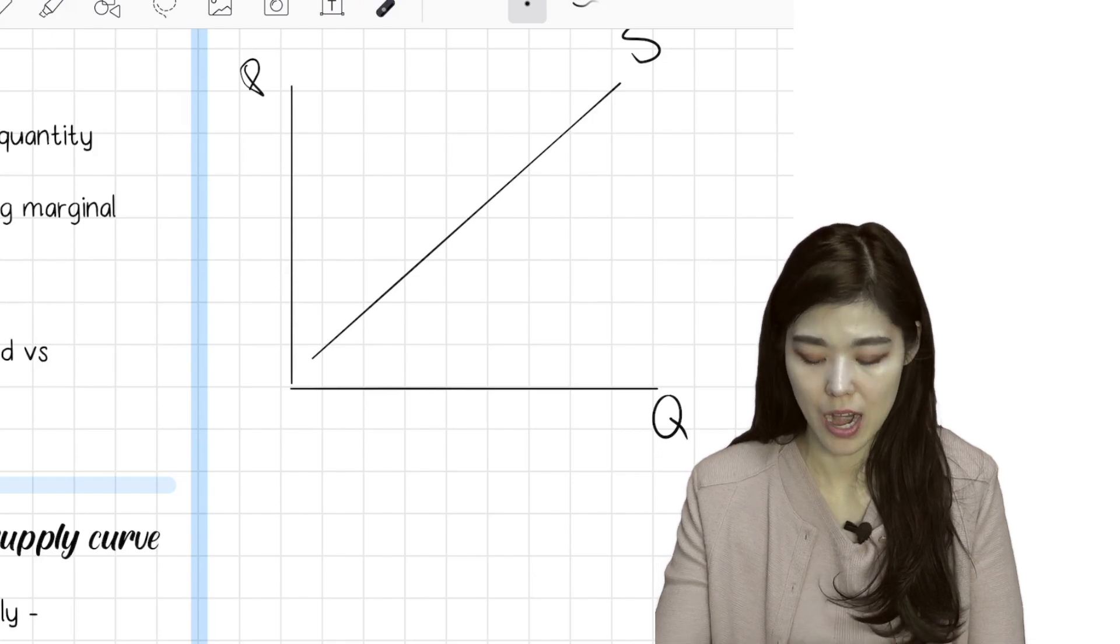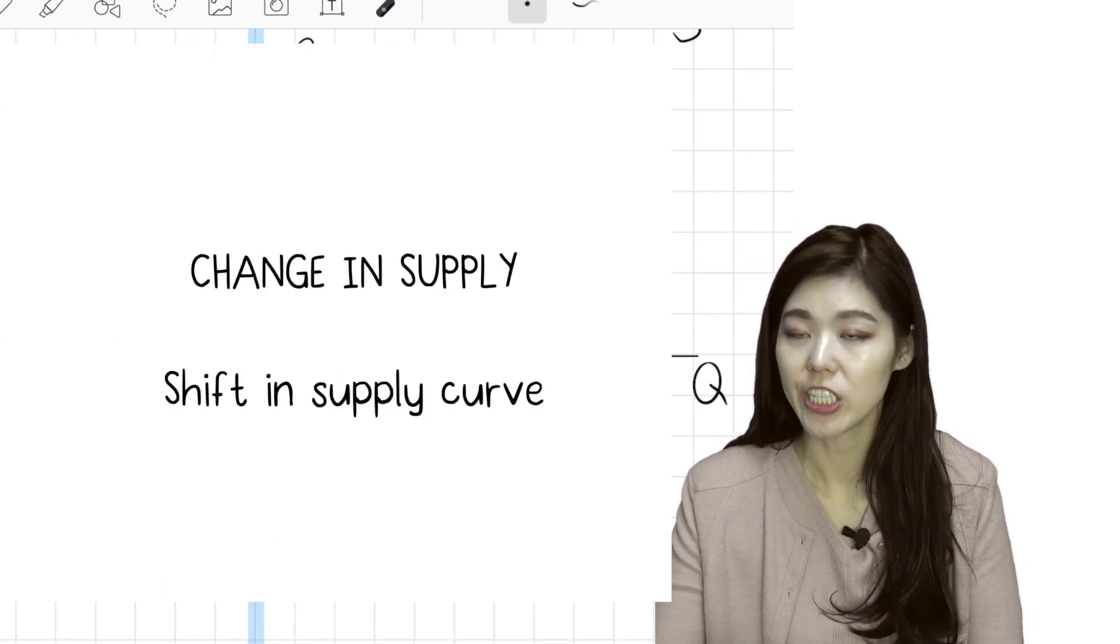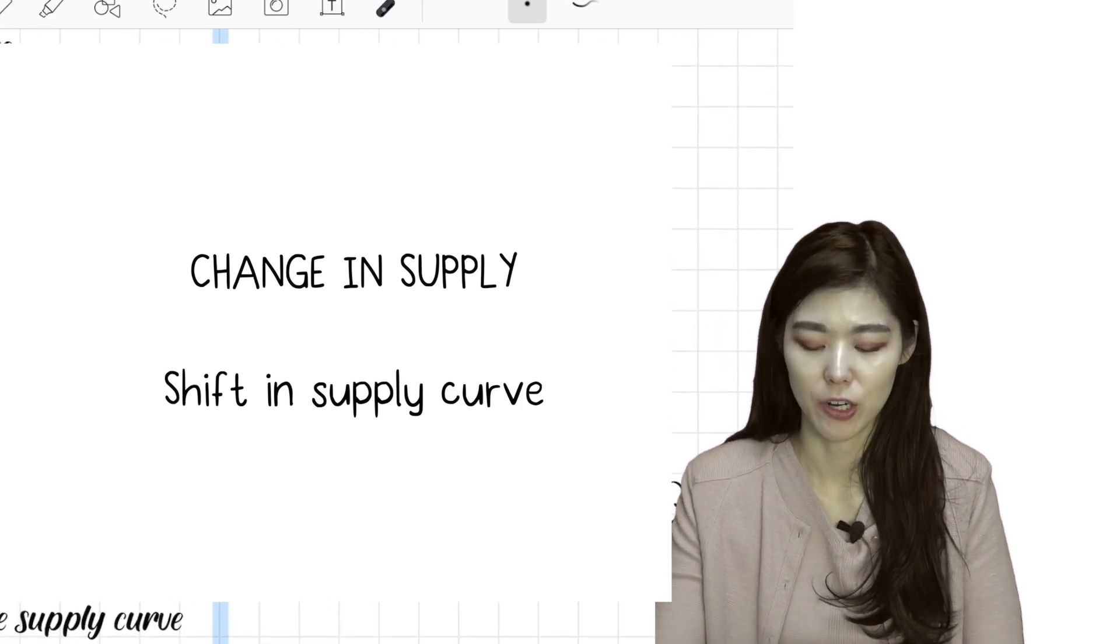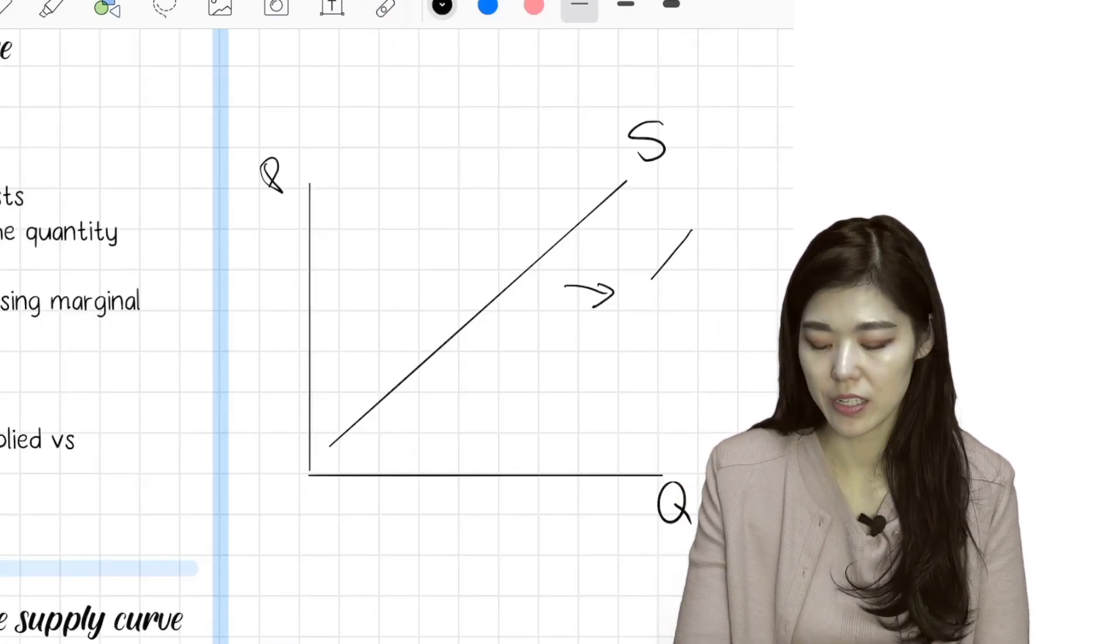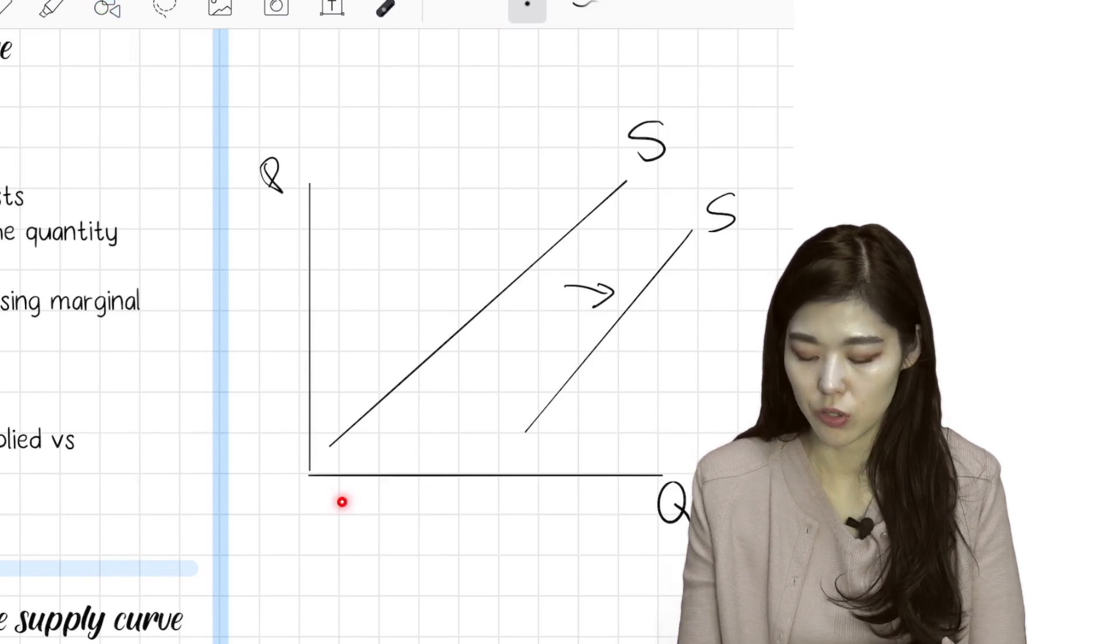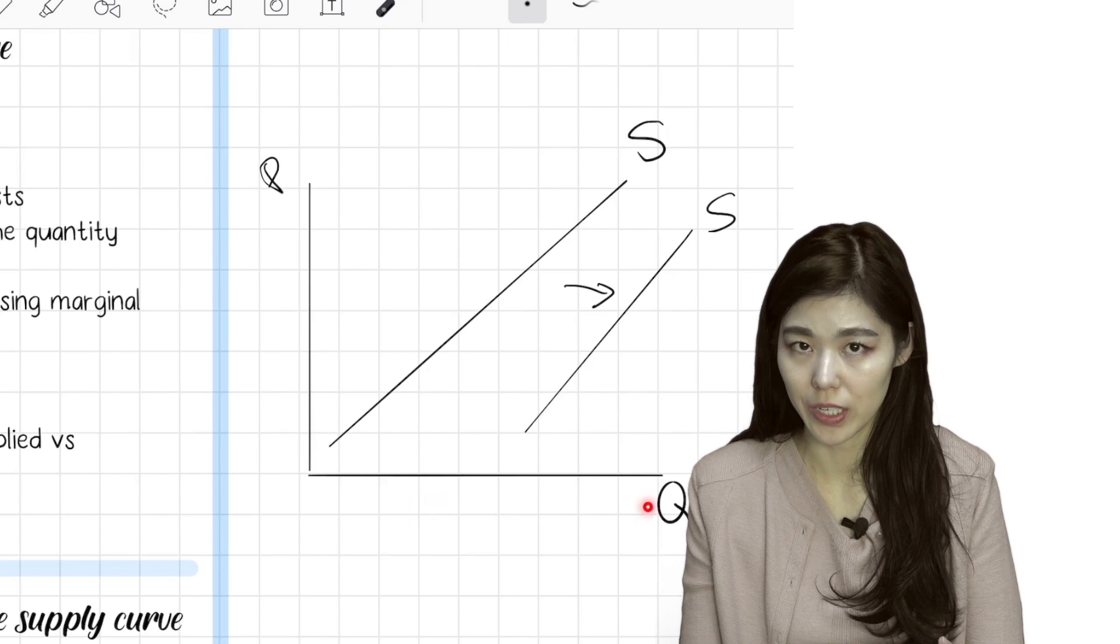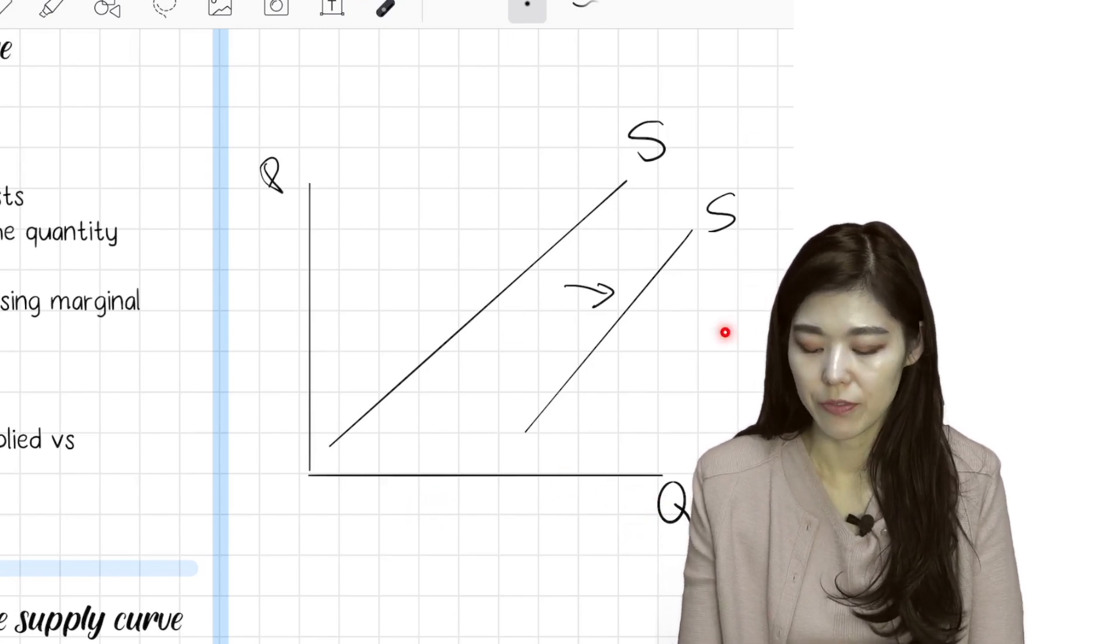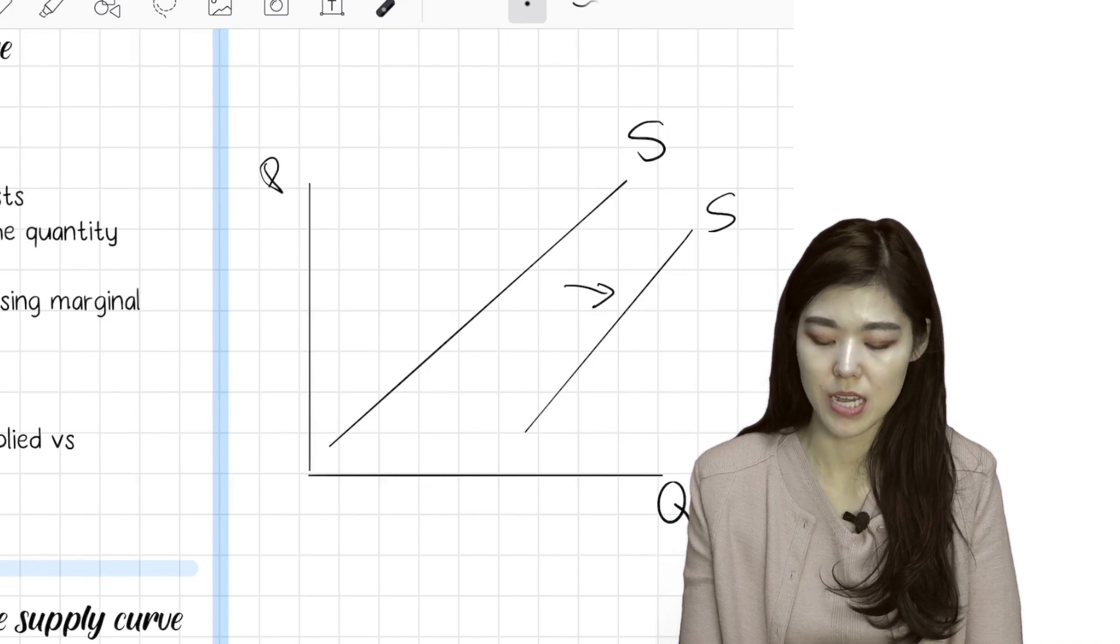And change in supply - change in supply means just a shift in supply curve, just like shifting to the right. It means supply has increased because, remember, as you go to the right, the quantity gets higher. So the supply shifting to the right like this would mean they are supplying more.